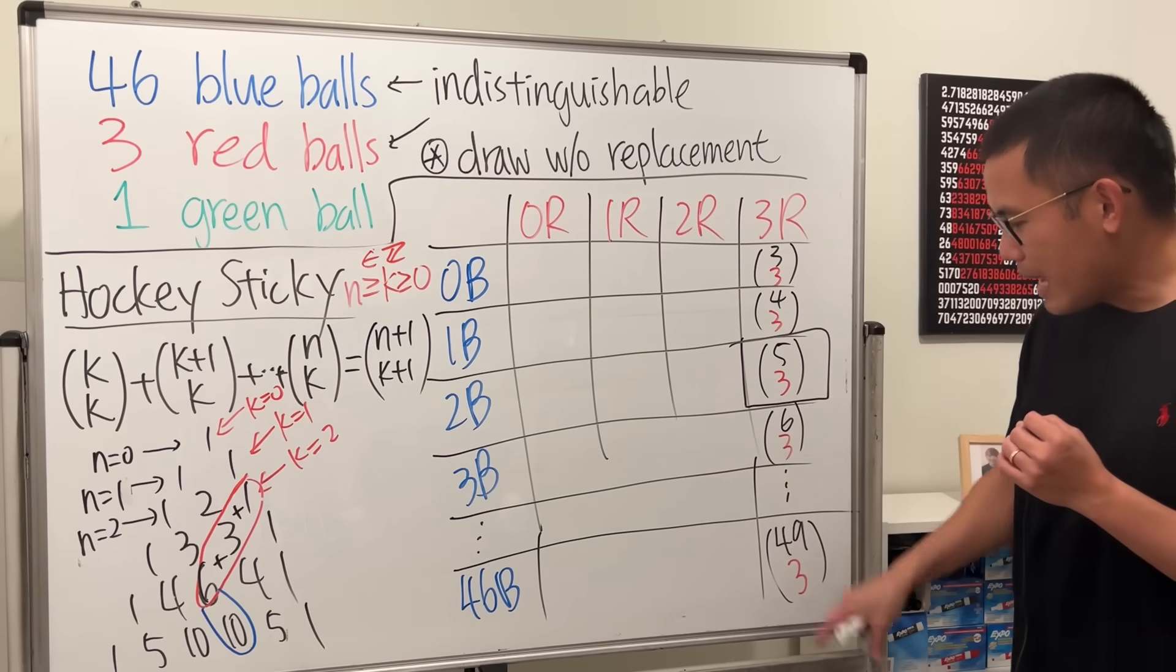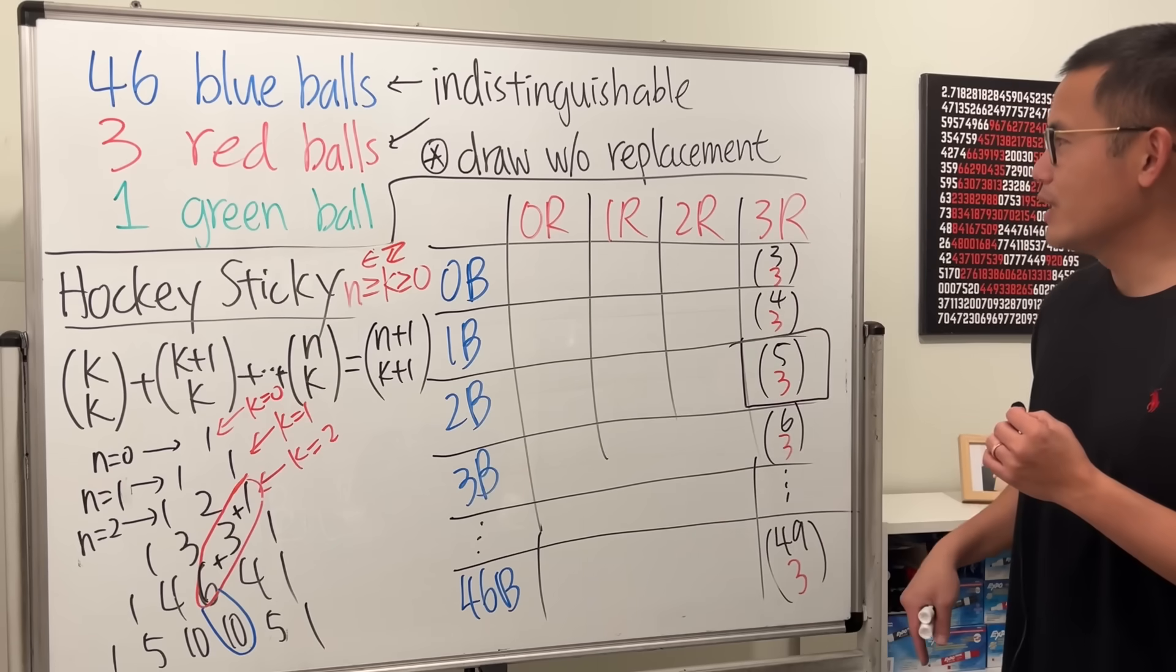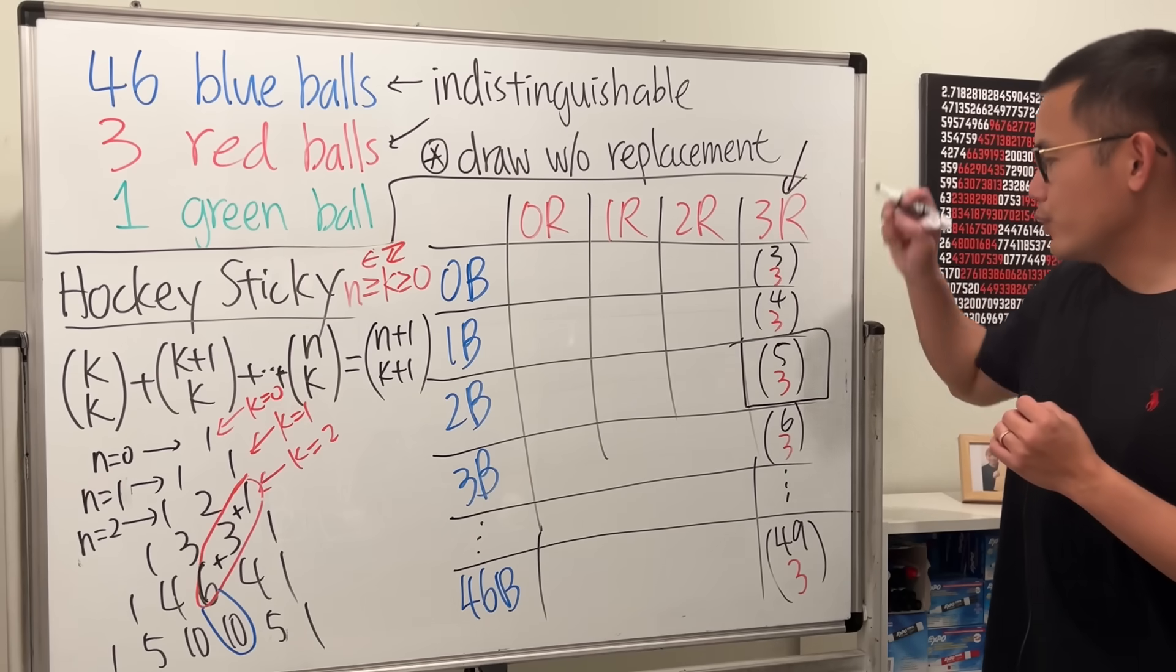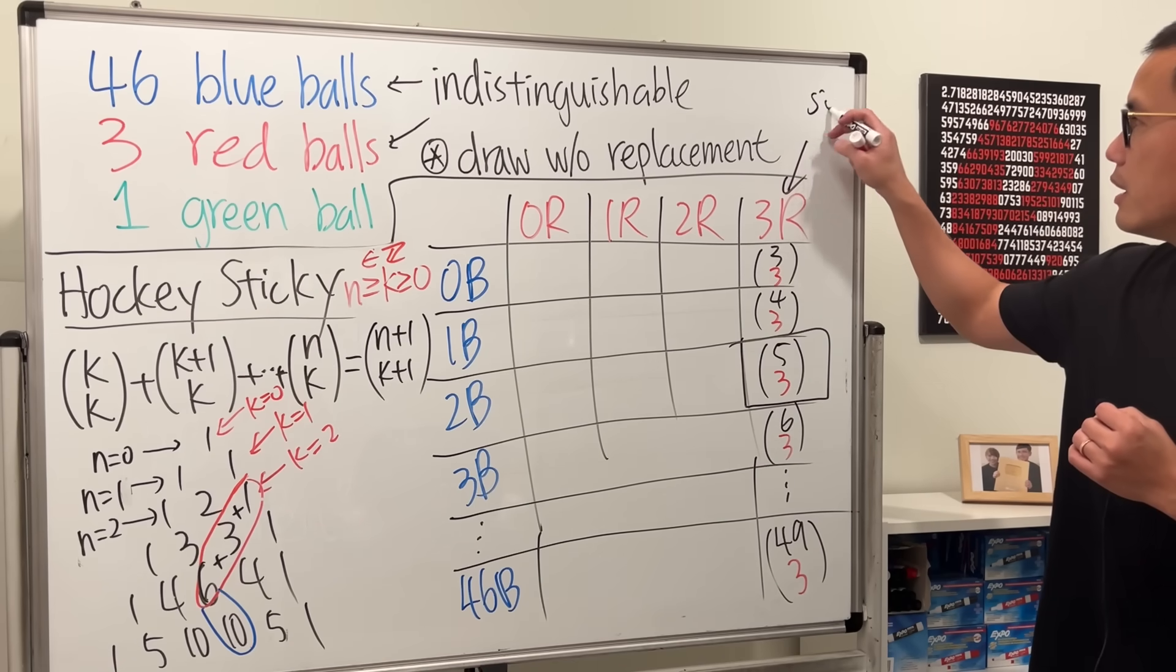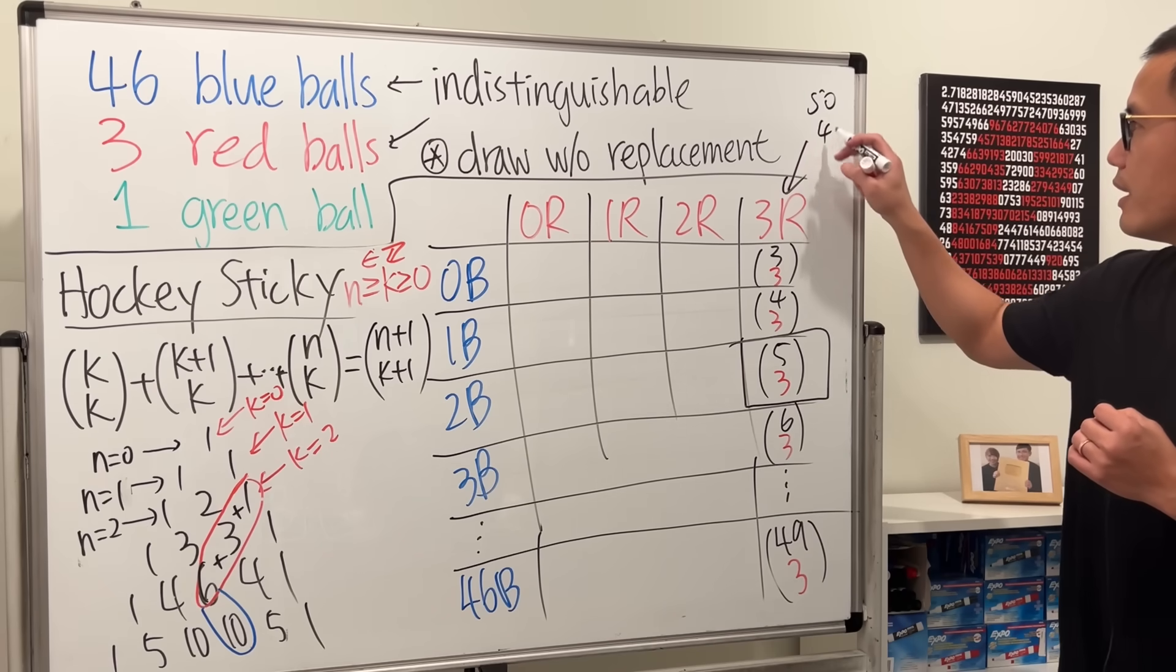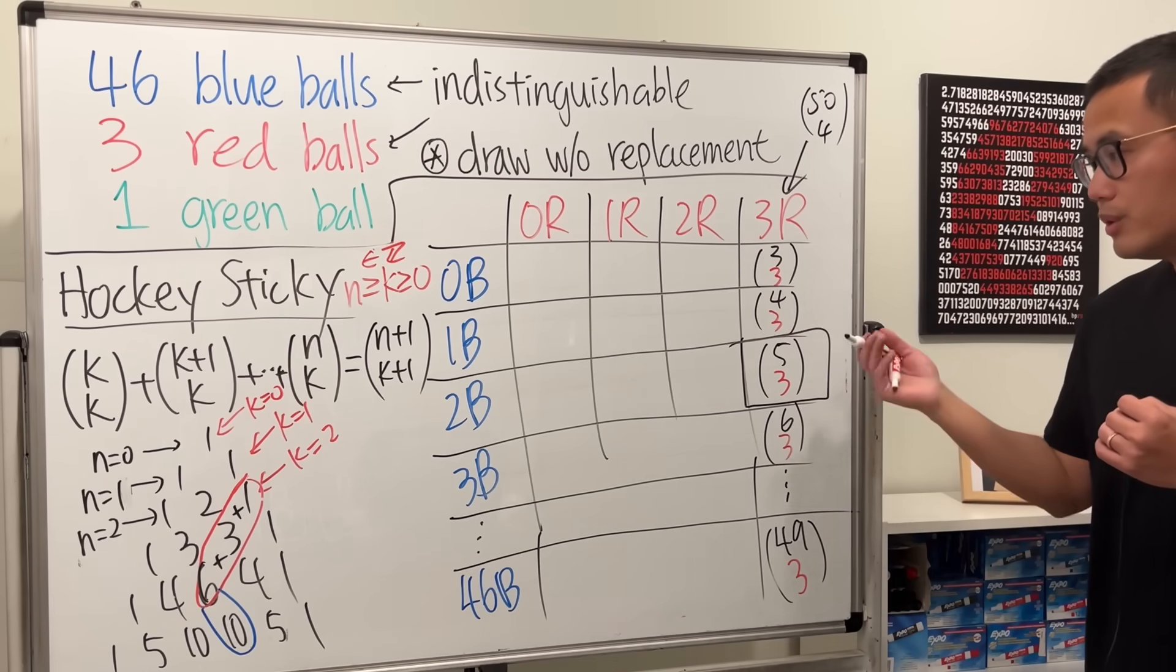So, when we add them up here, this right here will get what? This, we will get the next number, which is 50, and then we also have the choose 4. So, just like that.